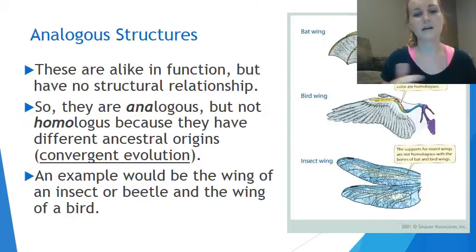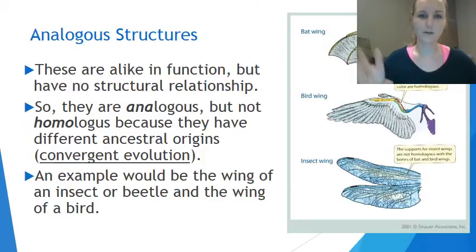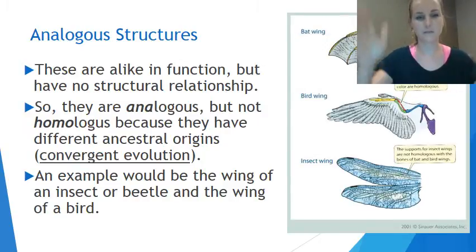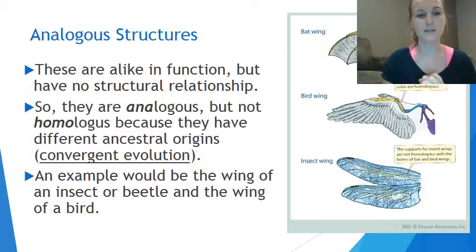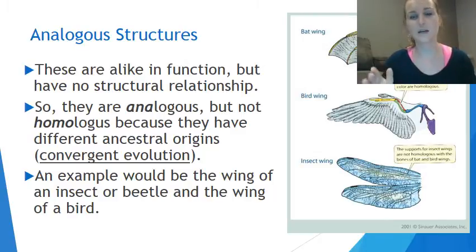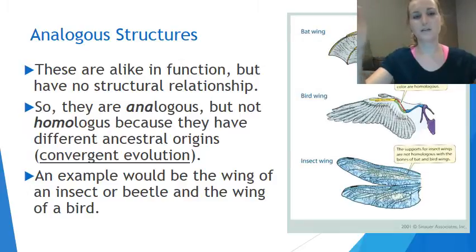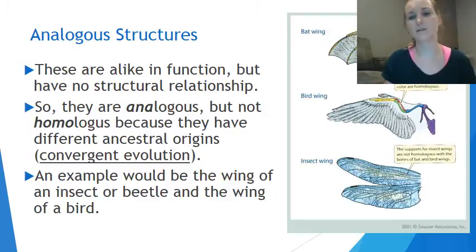Because they are analogous structures, they have different ancestral origins — they don't have a common ancestor. They've developed separately, not from one common previous ancestor. We call this convergent evolution, which means there is no common ancestor, yet these two structures have developed similarly in function.